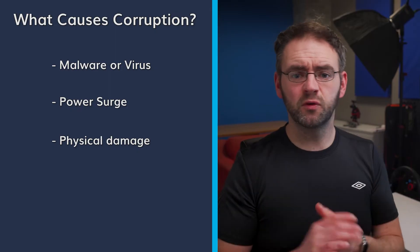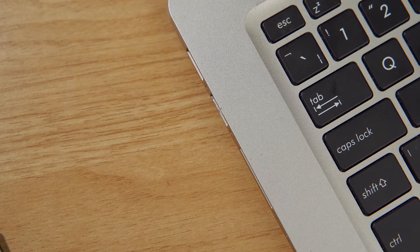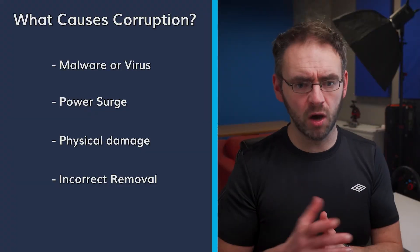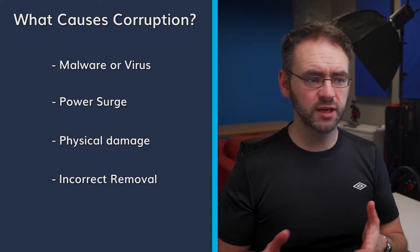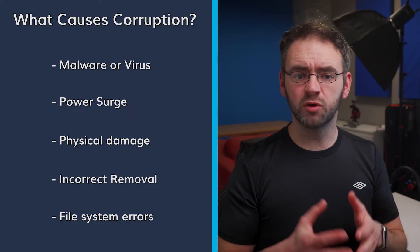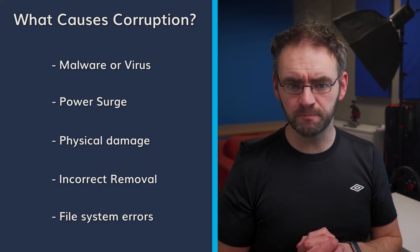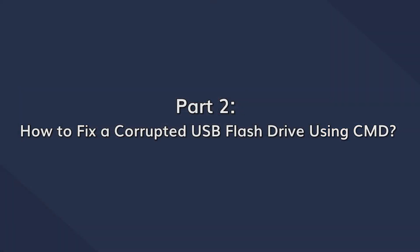It's possible for data corruption to occur if you remove the flash drive whilst files are still being copied onto it. It's also possible your flash drive could experience file system errors which could cause it to become corrupted and your data to become inaccessible. So now that you know the possible causes, how do we go about fixing a corrupted USB flash drive?